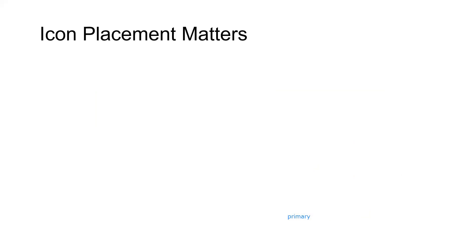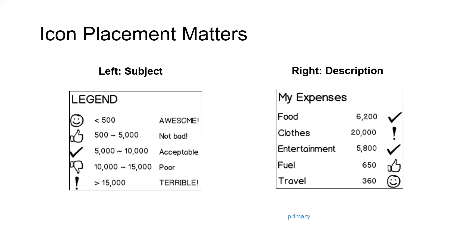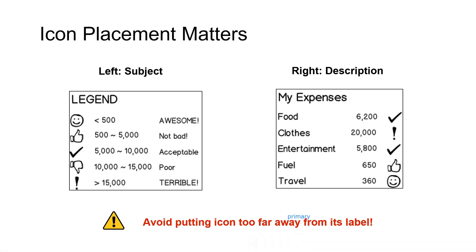The position of icons is quite critical. If you put your icon on the left, it becomes the subject, and whatever label follows becomes the description. If you do the opposite, the icon becomes the description. Whatever users see at the beginning is the subject — so left is for subject, right is for description. The diagram with icons on the left looks more like a legend; with icons on the right, it looks more like a report. Try to keep your icons as close to your label as possible so users can interpret them as a single entity.